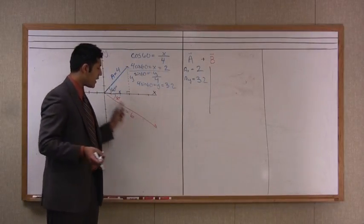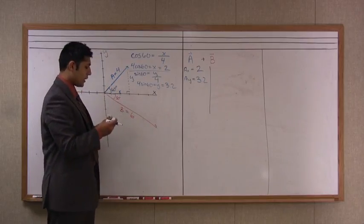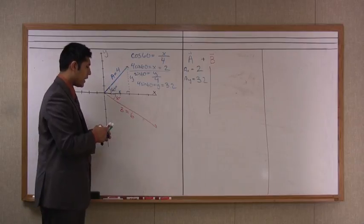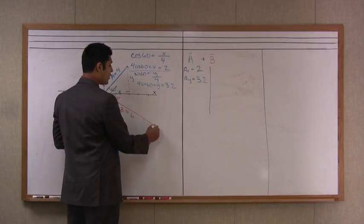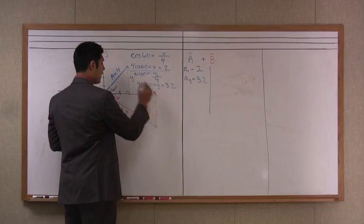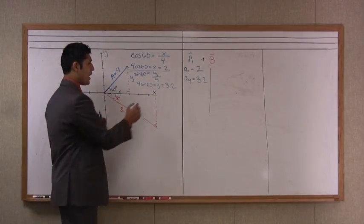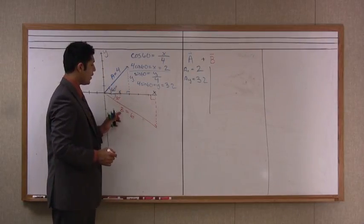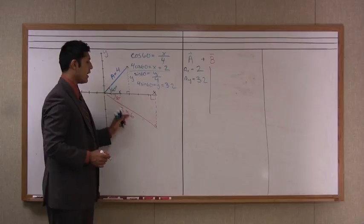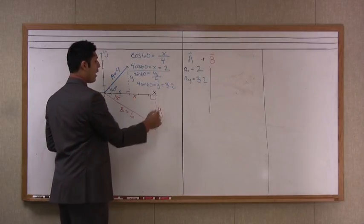B is again in the negative quadrant or at least in the negative y direction. And so again, let's use a similar technique we did and draw a dotted line from the end of b to my x-axis or my horizontal axis. And again, what I've done is I've created a right triangle here. And I know the hypotenuse is 6. And I'm again trying to find out what x is equal to and what y is equal to.